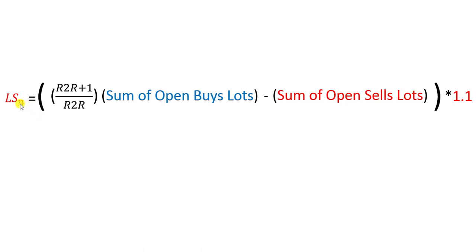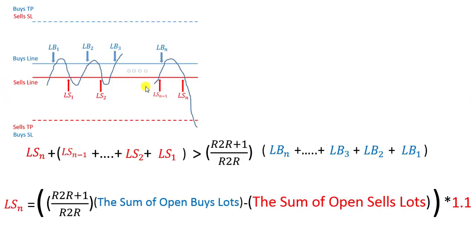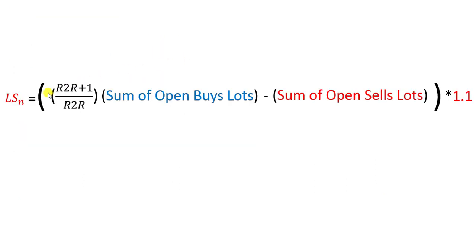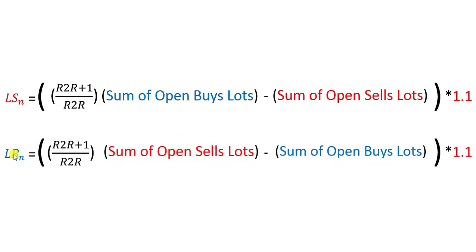And if instead of calculating the sell lot size we are crossing the buy line and want to calculate the lot size of the buy order, the formula is exactly vice versa: LS_n_buy = (risk-to-reward + 1) / risk-to-reward × (sum of open sell lots − sum of open buy lots), and in order to cover expenses we multiply by 1.1 to consider it 10% higher.